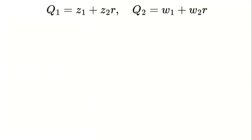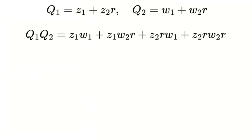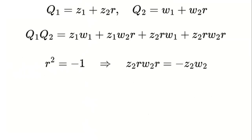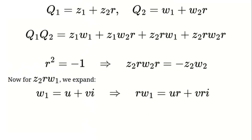Let's try multiplying two of these numbers together. Say q1 equals z1 plus z2 times r, and q2 equals w1 plus w2 times r. Multiplying them out gives four terms: z1 times w1; z1 times w2 times r; z2 times r times w1; and z2 times r times w2 times r. The first three are straightforward, but that last one is interesting. Since r squared equals negative 1, z2 times r times w2 times r simplifies to negative z2 times w2. For the third term, z2 times r times w1, we need to expand r times w1 — but we haven't defined what r times i actually is, so we need to define that next.